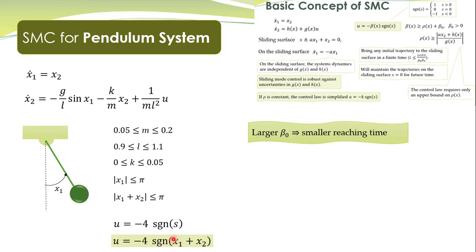Some discussion on β₀: it has to be some positive constant, but it can be smaller or larger. If we take β₀ to be larger, you will see that the reaching time will be smaller. The time required for the trajectories to reach the sliding surface—here β₀ is indeed in the denominator. So larger β₀ means smaller reaching time.